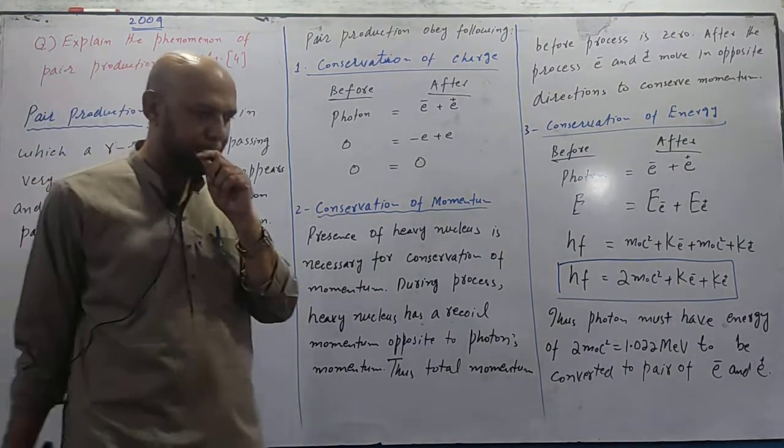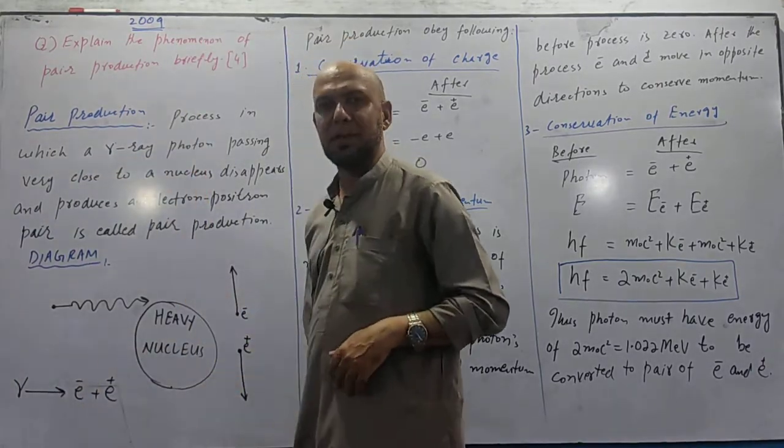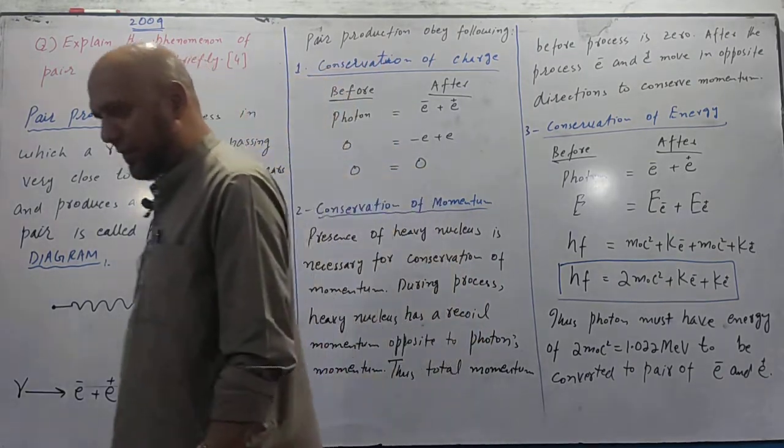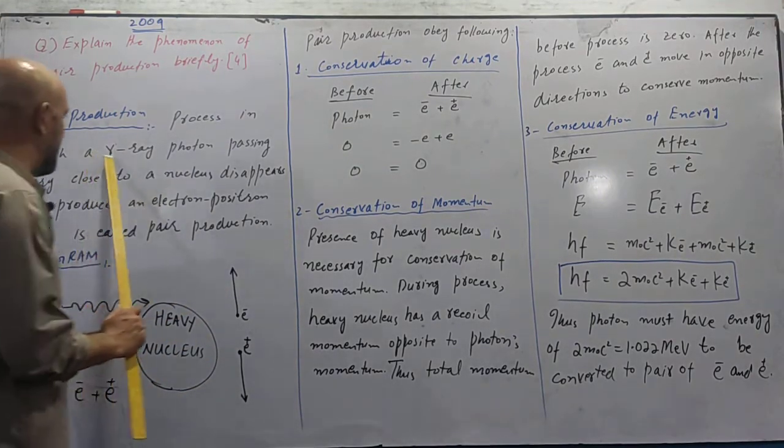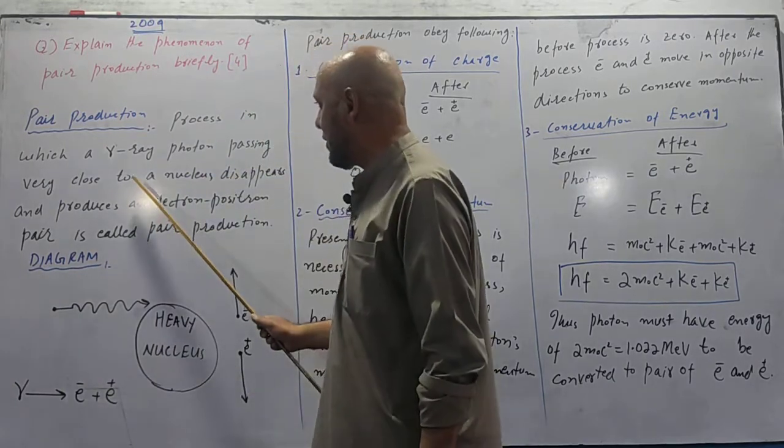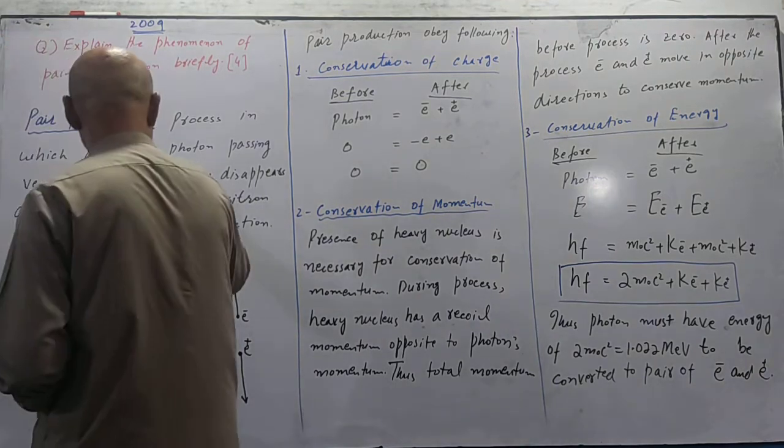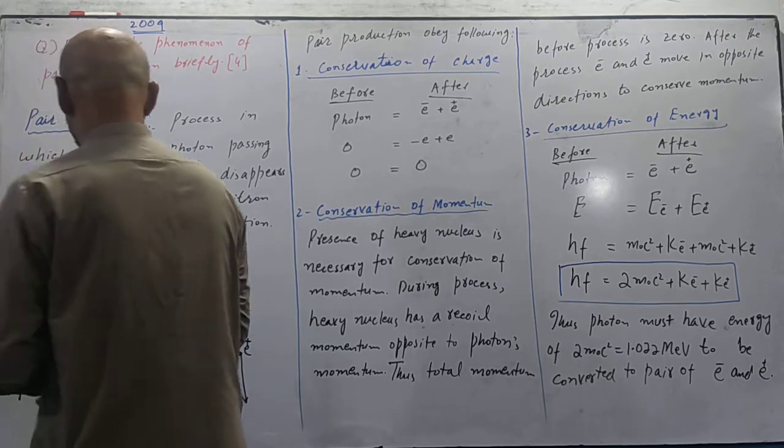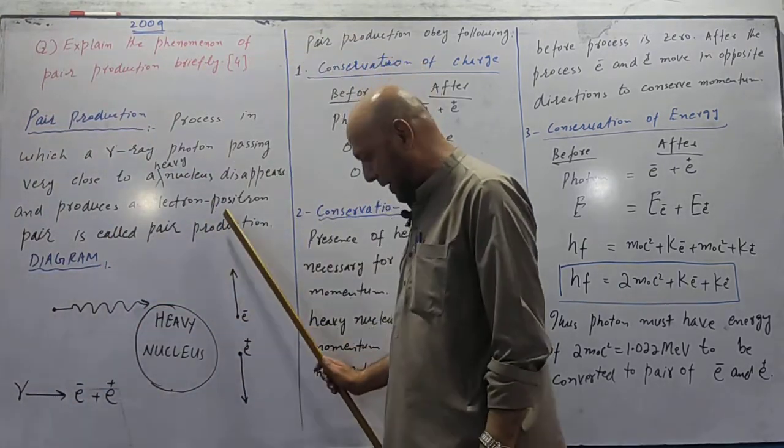Bismillah ar-rahman ar-rahim. Explain the phenomena of pair production. Process in which a gamma ray photon passing very close to a heavy nucleus disappears and produces an electron positron pair is called pair production.